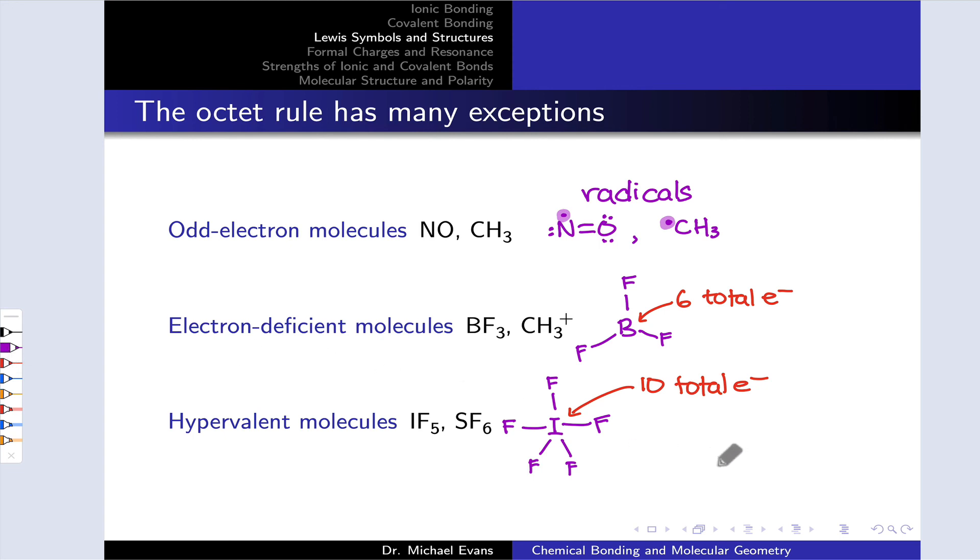Take for example, the Lewis structure of sulfuric acid, which is another example of a molecule that violates the octet rule by having too many electrons, more than eight at the central atom. The typical Lewis structure for sulfuric acid looks like this.